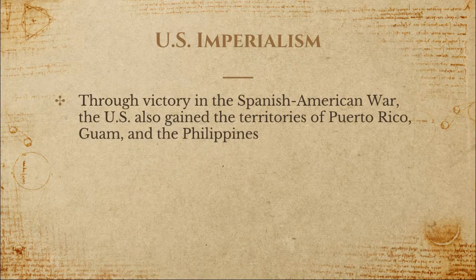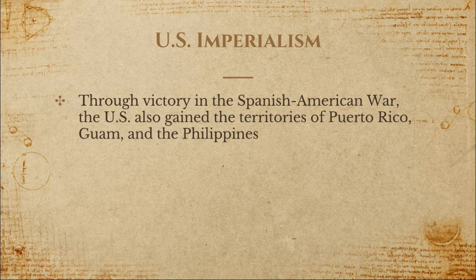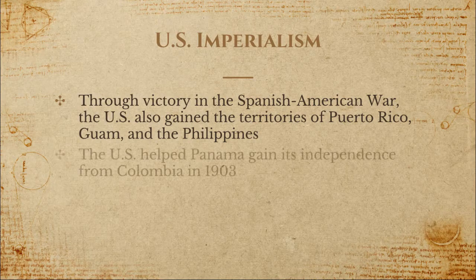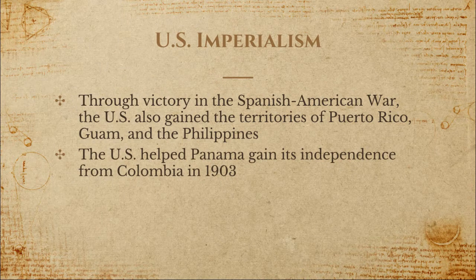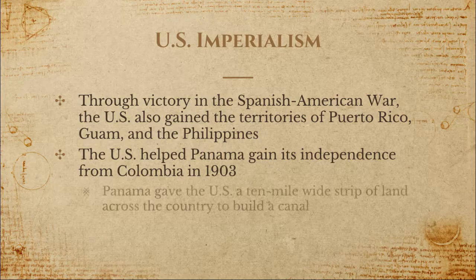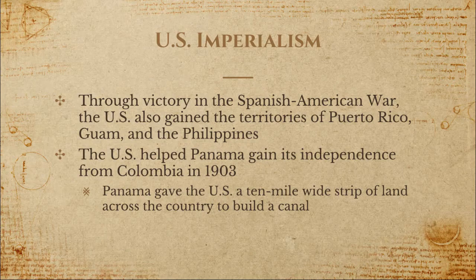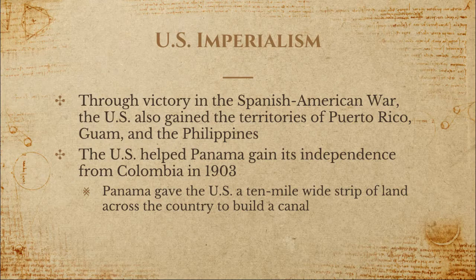In addition to the other territories discussed, the United States also gained Puerto Rico, Guam, and the Philippines after winning the Spanish-American War in 1898. The U.S. would also help the nation of Panama gain its independence from Colombia in 1903, and as a thank you, Panama gave the United States a 10-mile-wide strip of land across the country to build a canal — a very attractive piece of land from an economic standpoint.